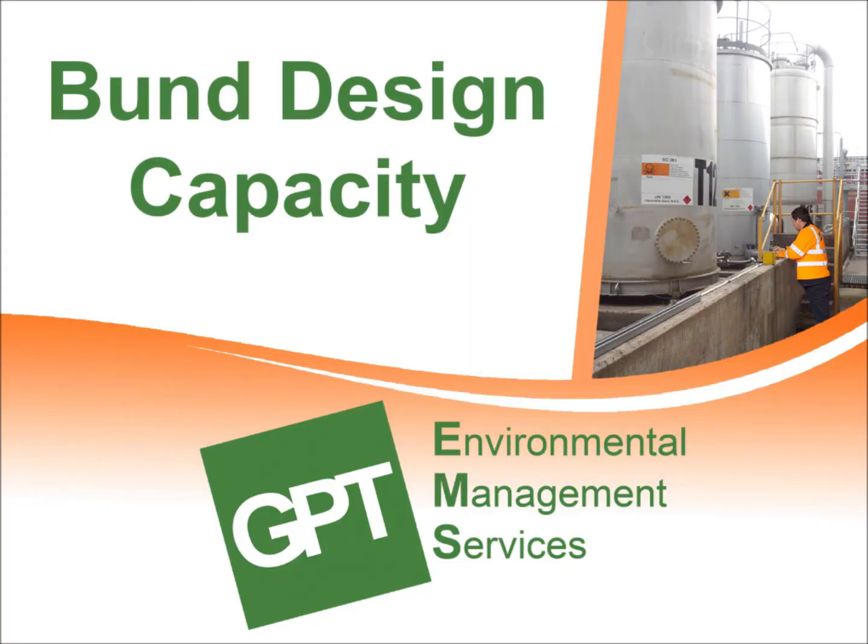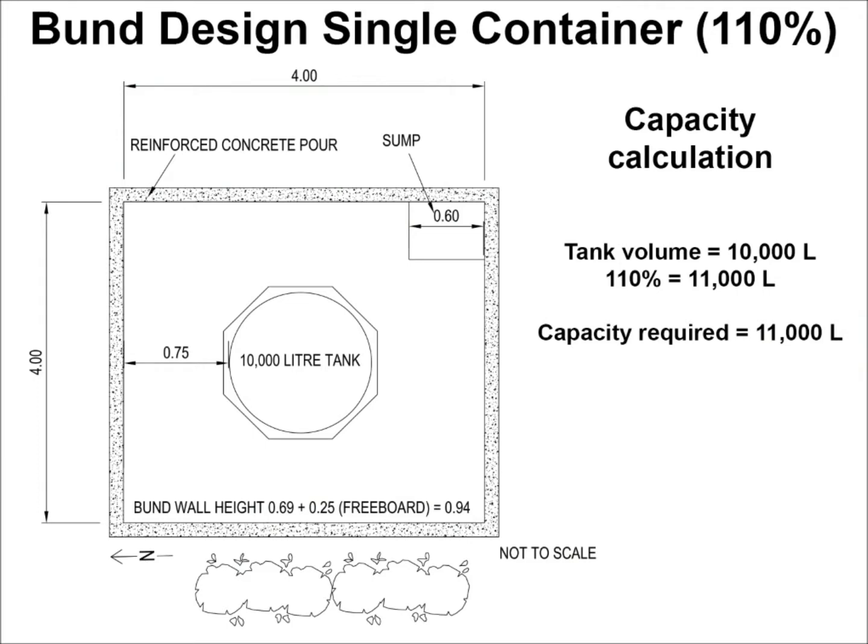Bund Design – Capacity. The first area of bund design we will look at is capacity. The industry standards are the 110% and 25% rules. These rules can cause some confusion, so we will explain them. The 110% rule is applicable where there is only one container stored inside the bund. In this situation, the calculation is simple: the bund needs to have the capacity of at least 110% of the primary containment volume.